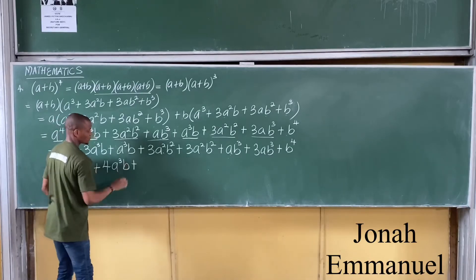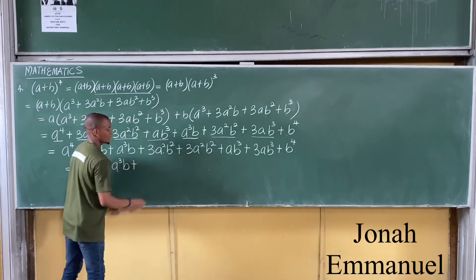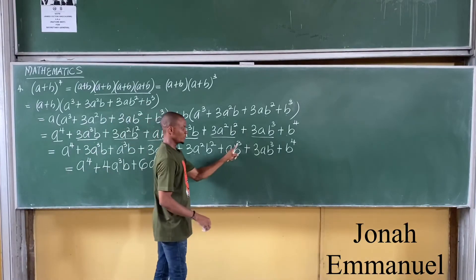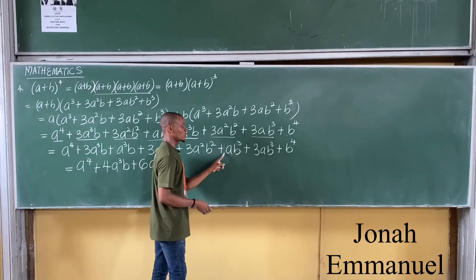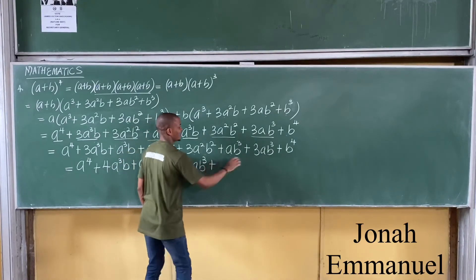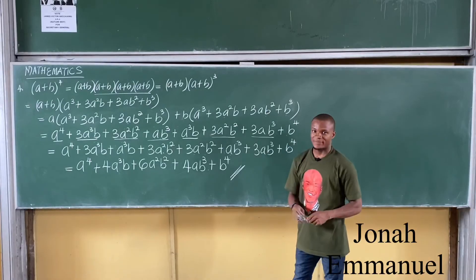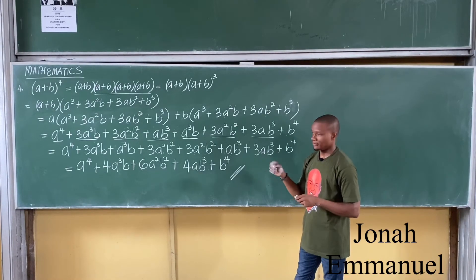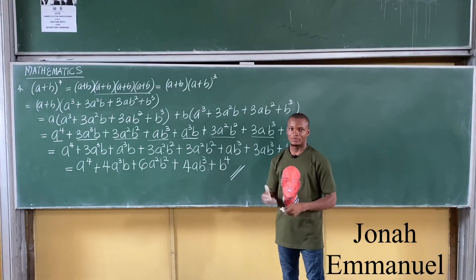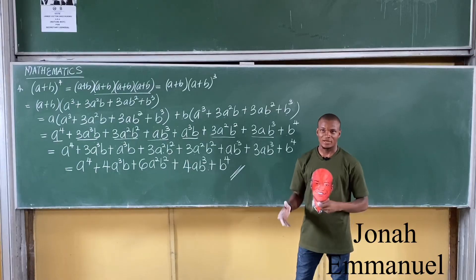So the final result of expanding (a + b) to the power 4 is: a to the power 4 plus 4a cubed b plus 6a squared b squared plus 4ab cubed plus b to the power 4. That's the result. In our next class, we'll look at how to solve this using Pascal's Triangle.